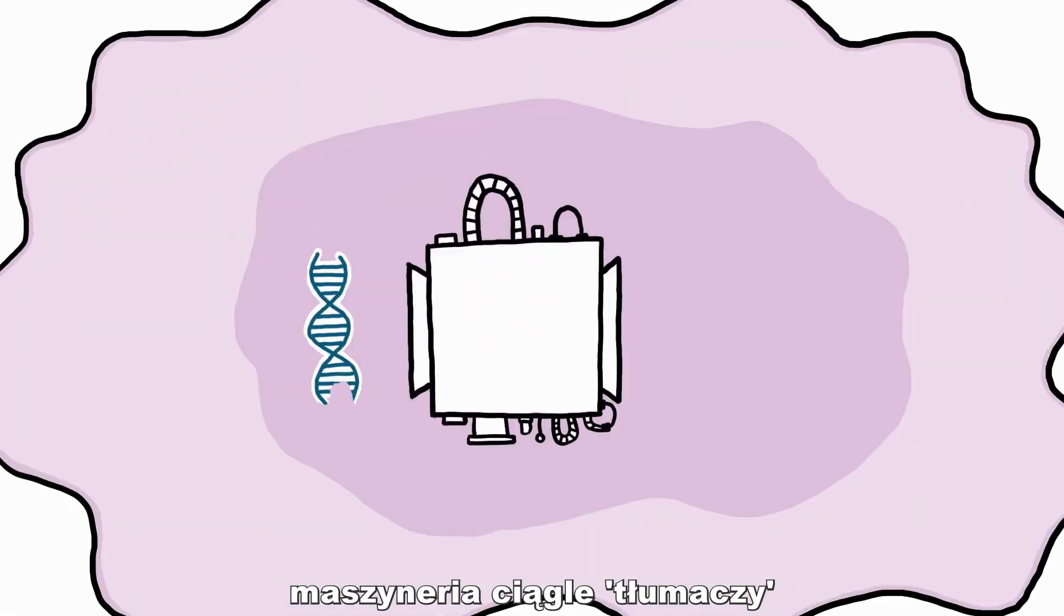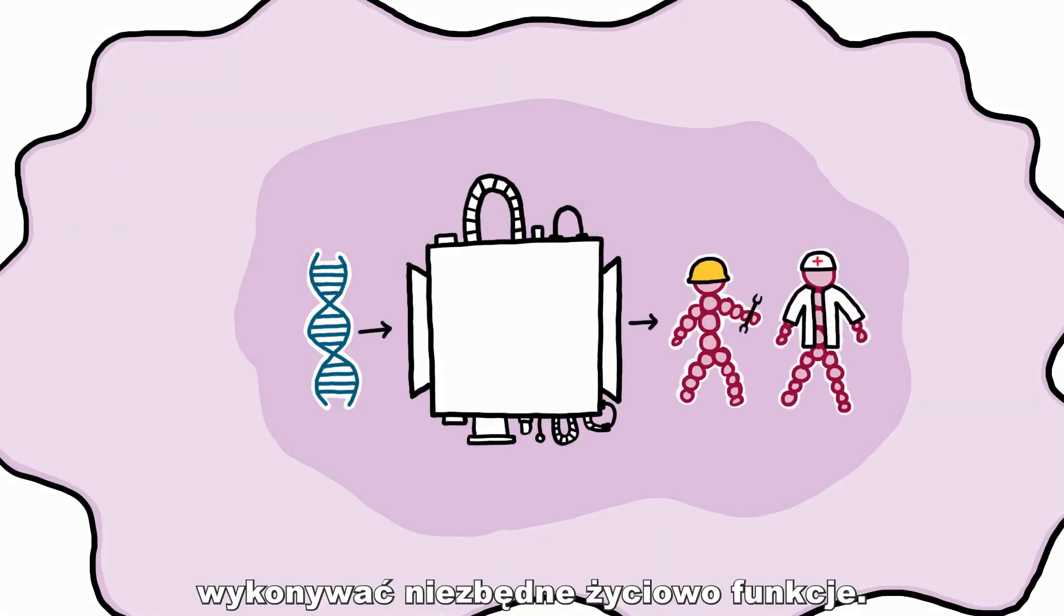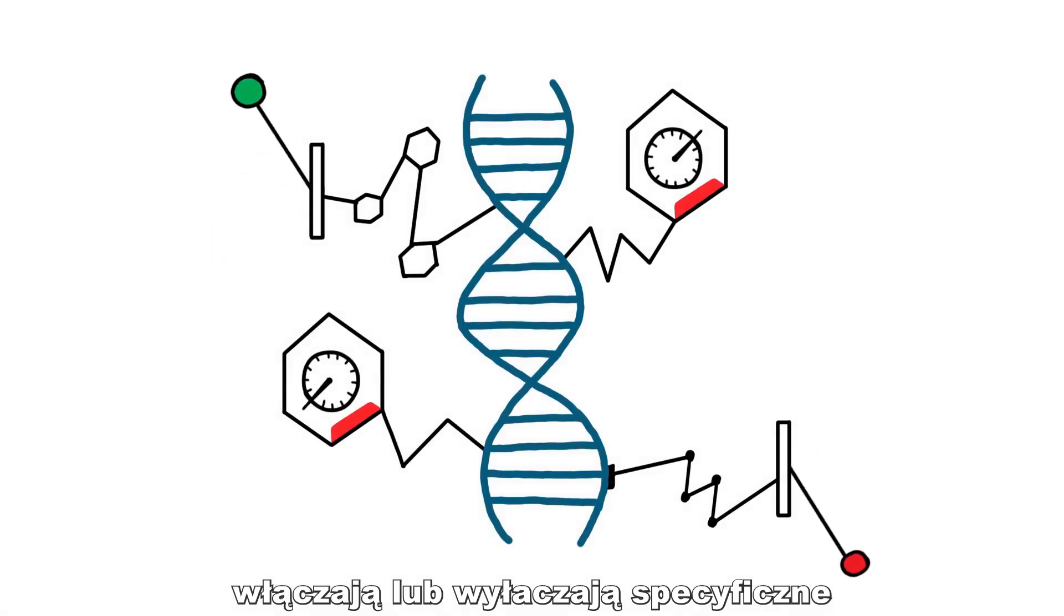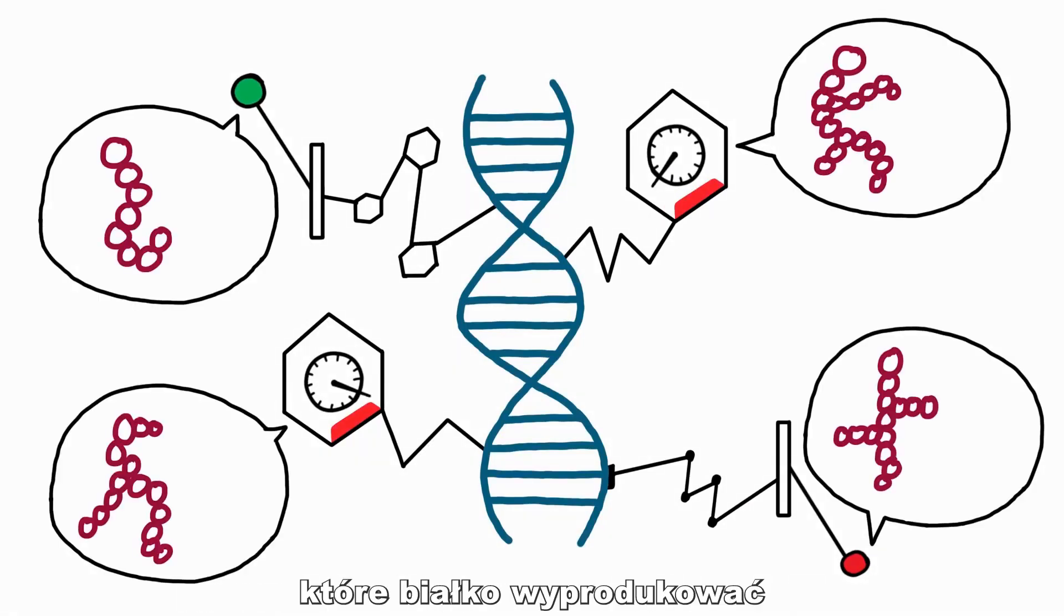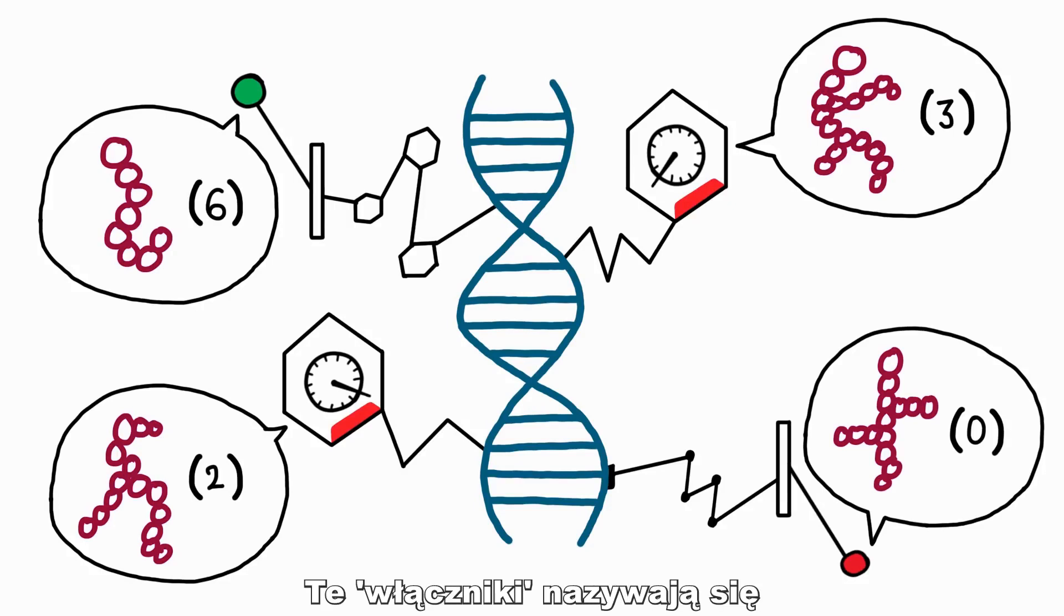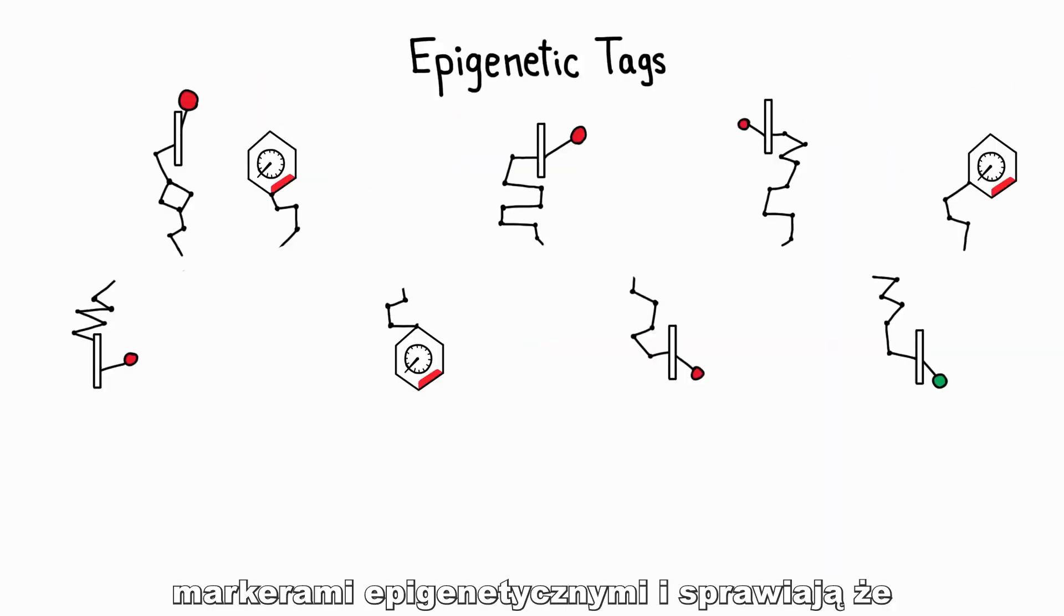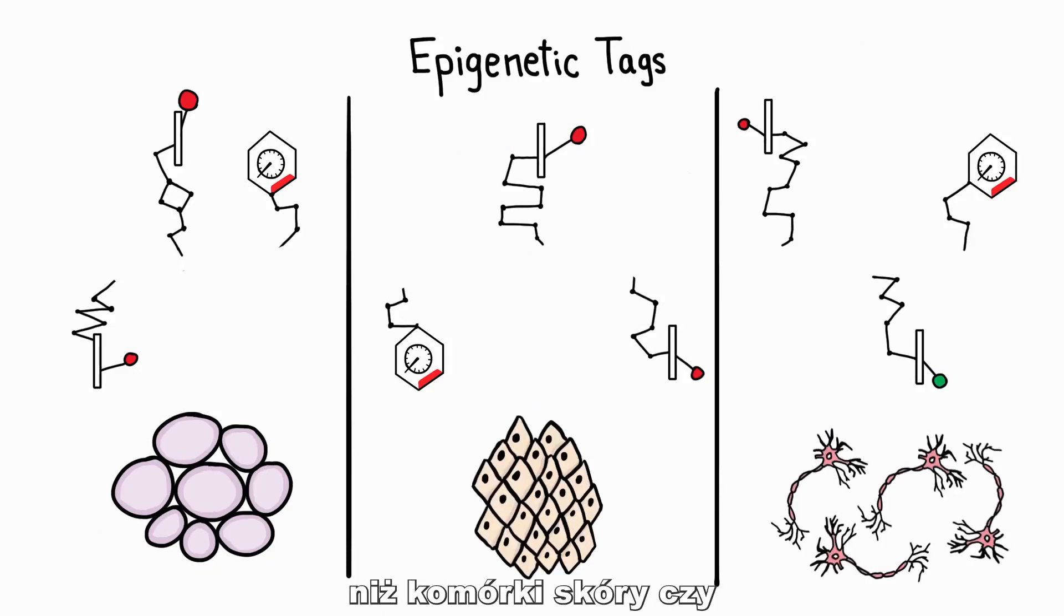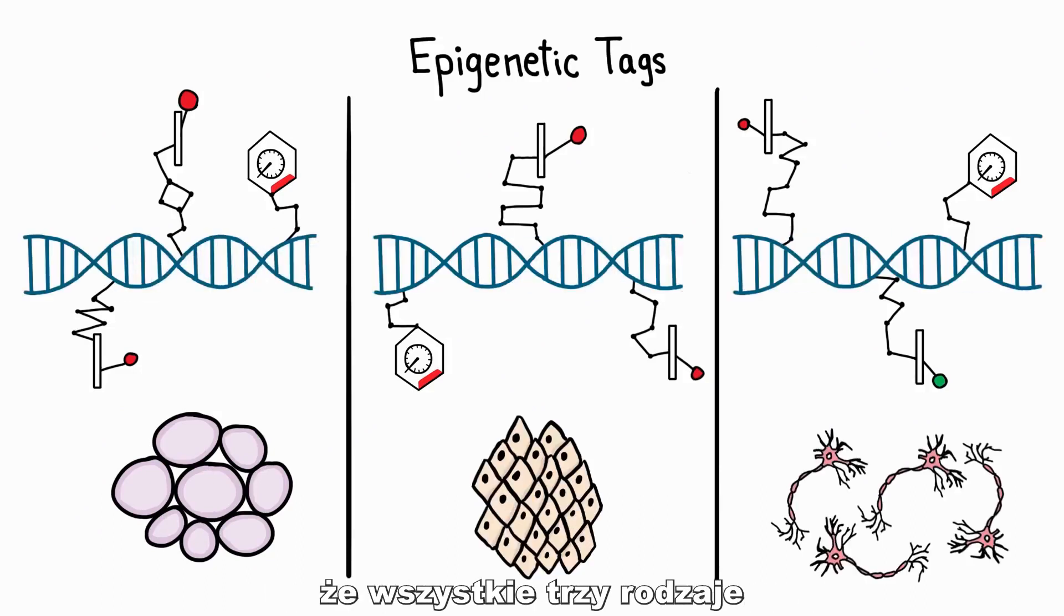In every cell, biological machinery constantly translates DNA into the proteins needed to carry out vital processes. Chemical switches attached to the DNA turn genes on or off or up and down, telling the machinery which proteins to produce and in what quantities. These switches, called epigenetic tags, are why a kidney cell looks and acts differently than a skin or nerve cell, even though all three cells have identical DNA.